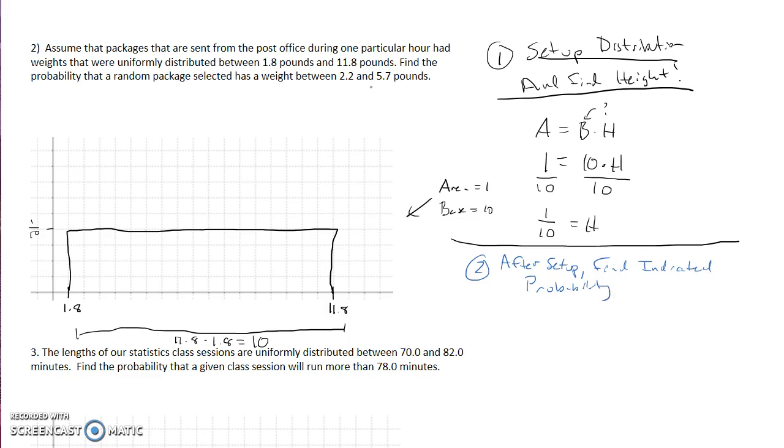So it says find the probability that a randomly selected package has a weight between 2.2 and 5.7. So 2.2 is right here, let's say 5.7 is somewhere right around here.